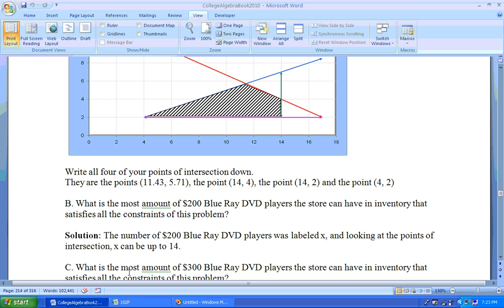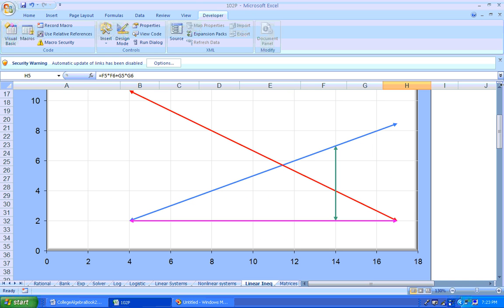What is the most amount of $300 Blu-ray DVDs? Well, the highest the y values can go is clear up to this point right there. And that point is actually where the red and blue line intersect.